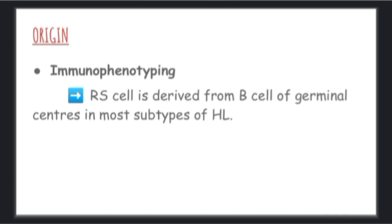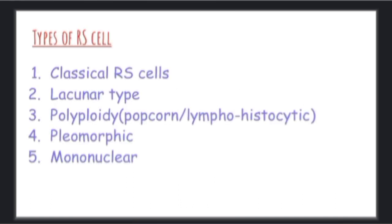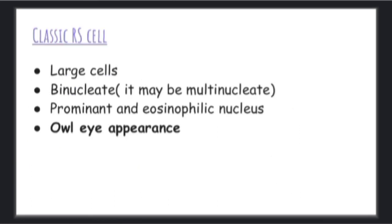B cells of germinal centers. Now let's talk about the types of RS cells one by one. After discussing all the types, we will see histopathological slides to differentiate between types of RS cells. First, the classic RS cell: it is a large cell with a diameter of 45 micrometers, generally binucleate but may be present as multinucleate.